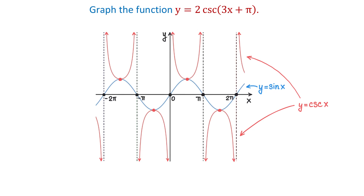In this example, we will graph the function y equals 2 cosecant of 3x plus pi. And before we do that, we will review the graphs of the basic sine and cosecant functions.